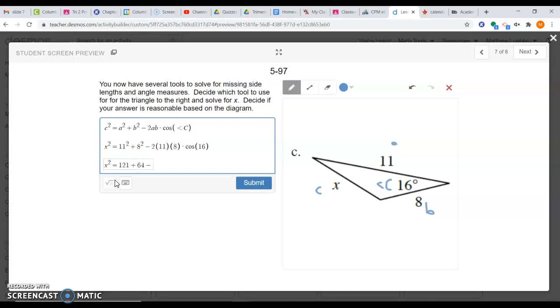Minus 2 times 11 times 8. That's how I see that, negative 2 times 11 times 8. What that gives me is negative 176, times the cosine of 16. That's my next step.